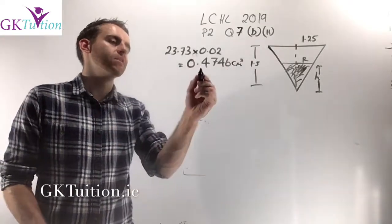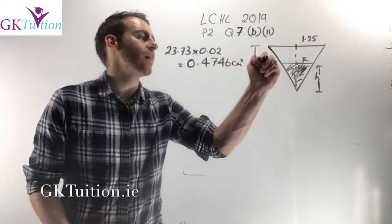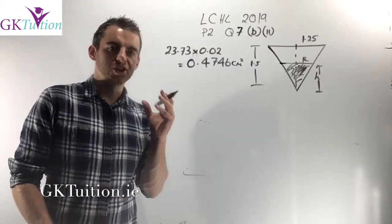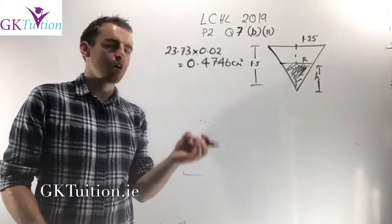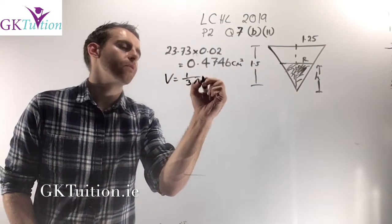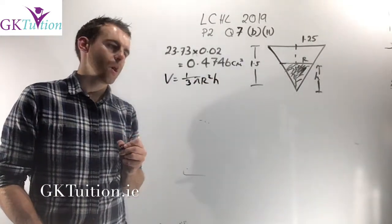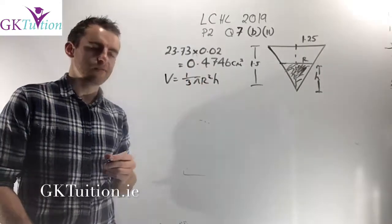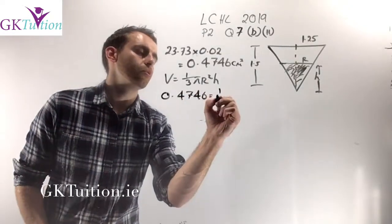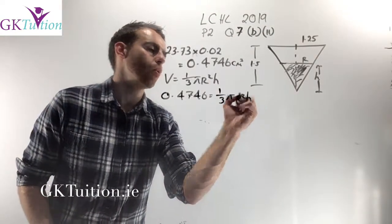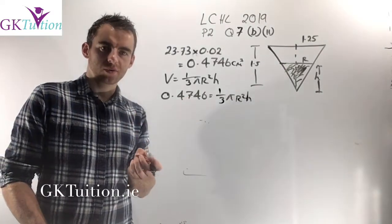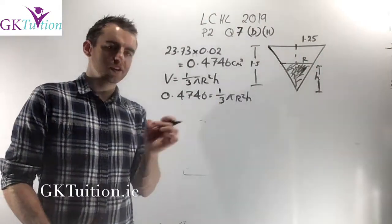The volume of sand is 0.4746 cm³, the surface is flat, and the sand forms a cone shape. Using the formula for the volume of a cone: one third pi r squared h equals 0.4746. But this is one equation with two unknowns — r and h — so as it stands it's impossible to solve directly.